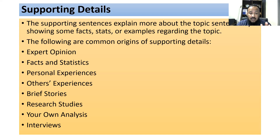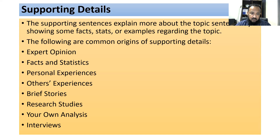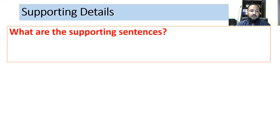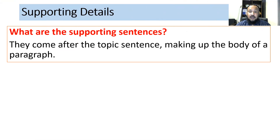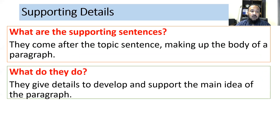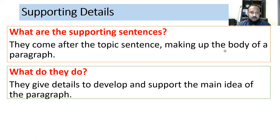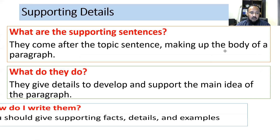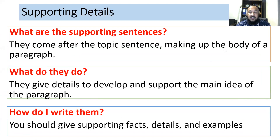These things make up your supporting content. You will present facts and connect examples to support what you are saying. There are generally three supporting sentences in a paragraph. What are the supporting sentences? They come after the topic sentence, making up the body of the paragraph. What do they do? They give details to develop and support the main idea of the paragraph. How do I write them? You should give supporting facts, details, and examples — anything that supports your topic sentence — but it should be in order.